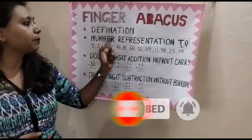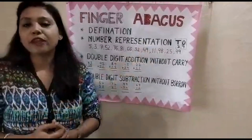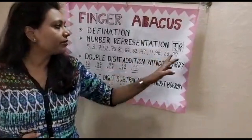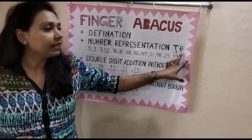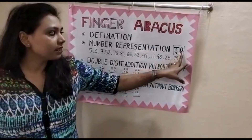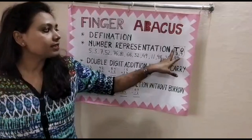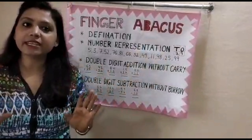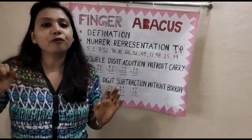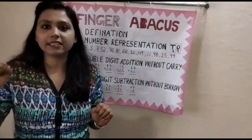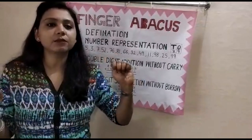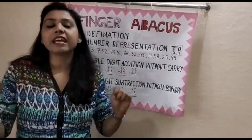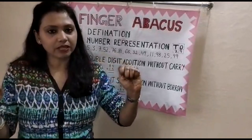So let us start with number representation. When we write any number, there is always a place. Like when we write 29, 9 has the 1's place and 2 has the 10's place. The same way when we represent numbers on fingers, we assume that the right hand is 1's place and the left hand is 10's place.